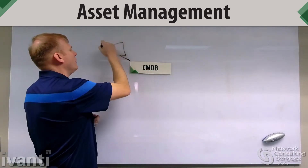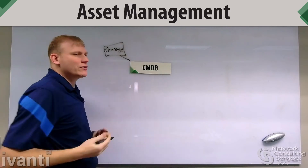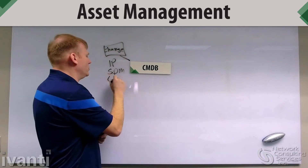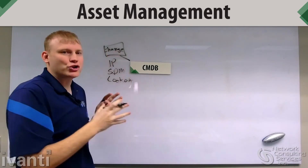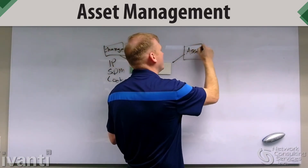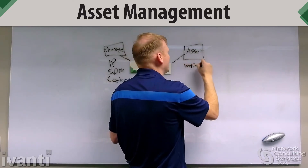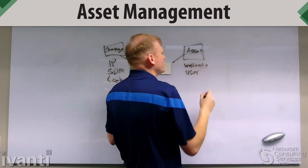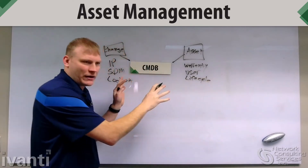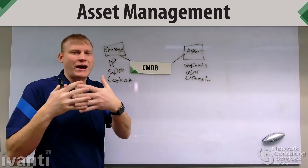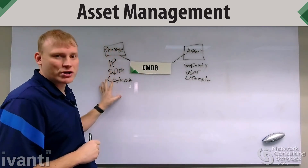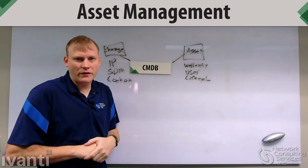I have my CMDB view here. If I log in as a change administrator, I'll see things like IP address, service dependency mapping, and lockout windows — information relevant to change management. But if I log into the same system as an asset administrator, I'll see things like warranty, who the asset is assigned to, and the expected lifecycle. It's the same database shown from two different perspectives, so we don't have to synchronize the two. Our CMDB is just seen from a change administrator lens on one side and an asset administrator lens on the other.